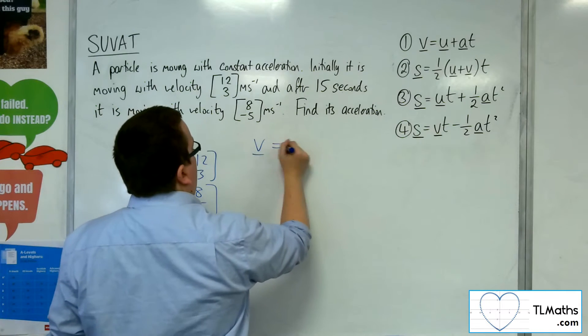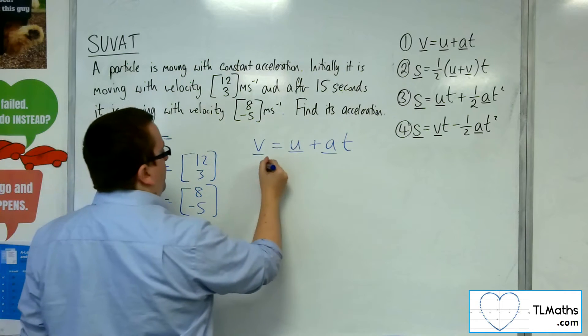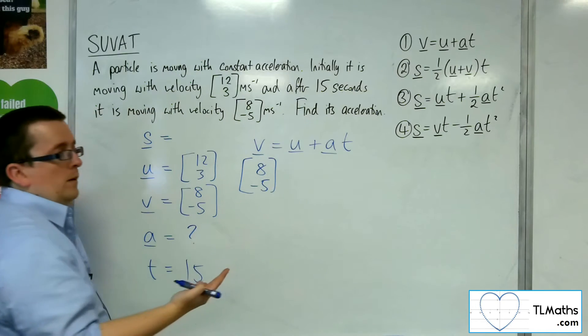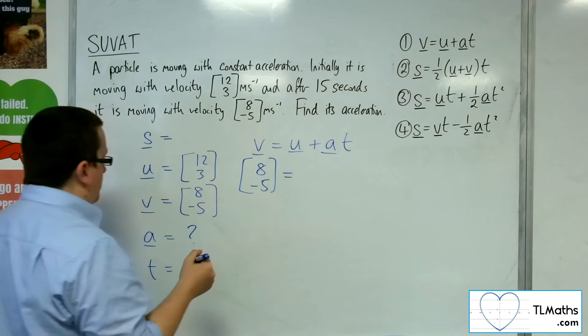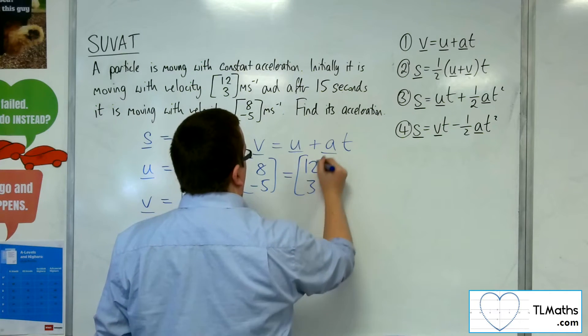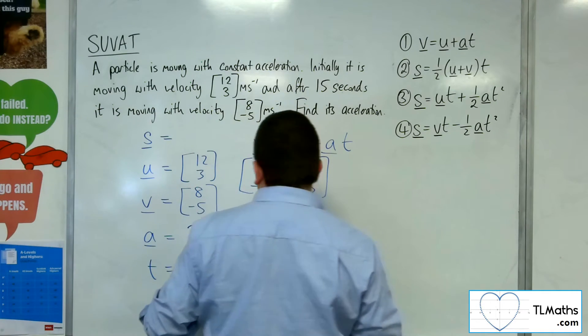So, v is equal to u plus a t. So, that would be 8 minus 5. You can put it into i's and j's component form if you like. It's really up to you. U is 12, 3. And a is what we want to find, but we don't know t.